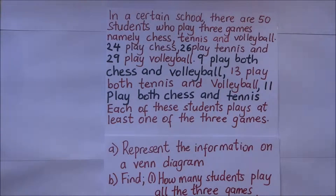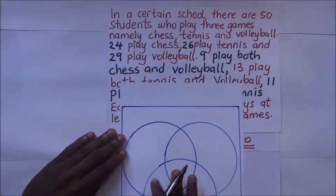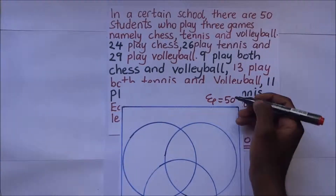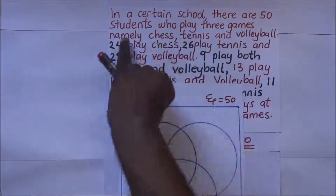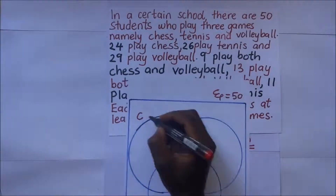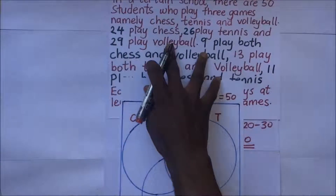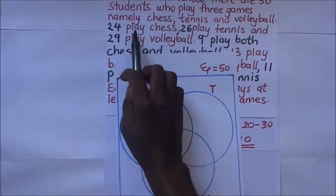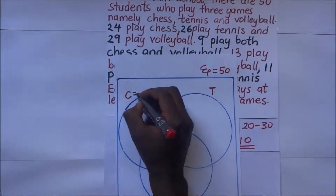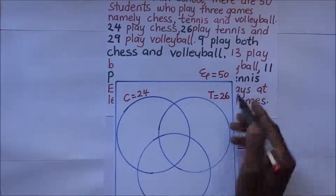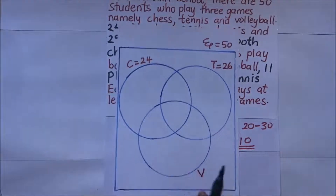We represent this information on a Venn diagram — that's going to be our first task. We interpret this question into a Venn diagram before we can answer any other questions. Our universal set is 50 students playing three games: chess, tennis, and volleyball. 24 play chess, 26 play tennis, and 29 play volleyball.